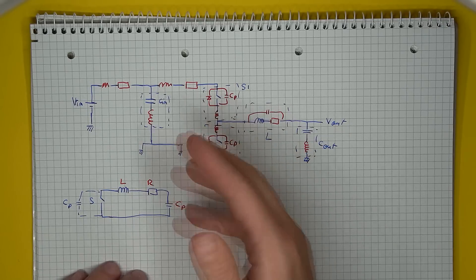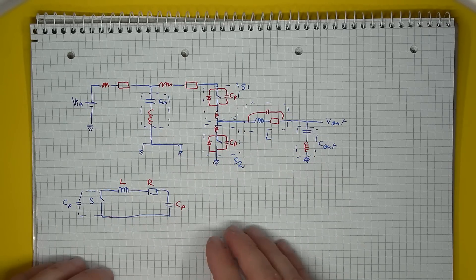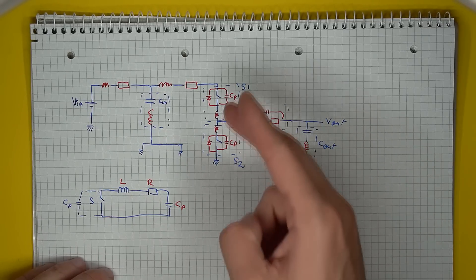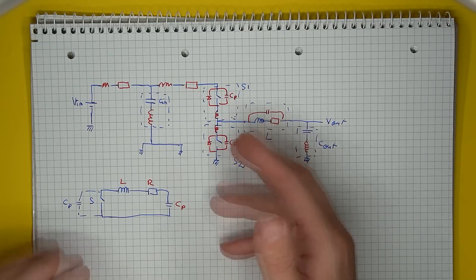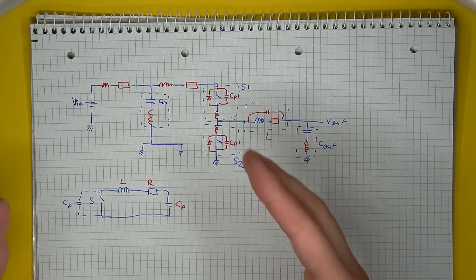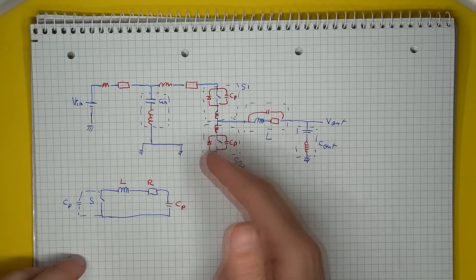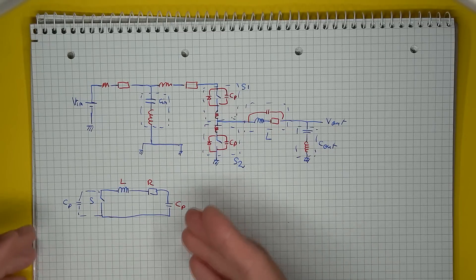Now we can redraw our hot loop a bit to highlight our problem. So when one switch is closing and the other one is open, we are generating a square, or to be more accurate a trapezoid wave, that ends up driving a RLC series circuit.